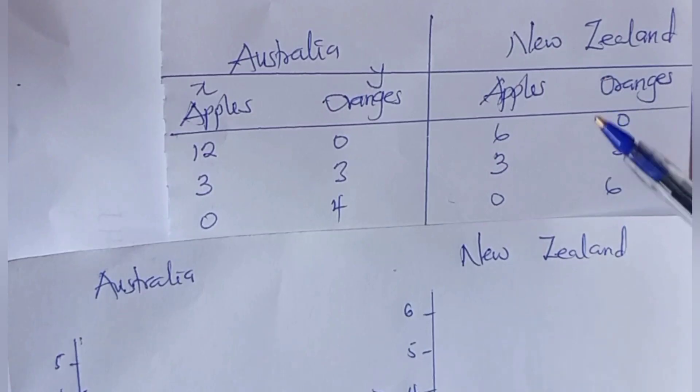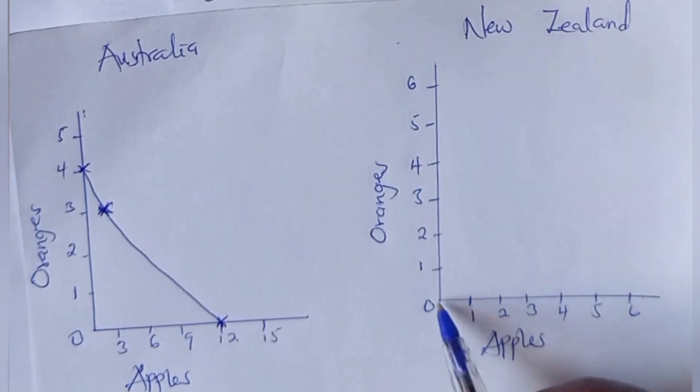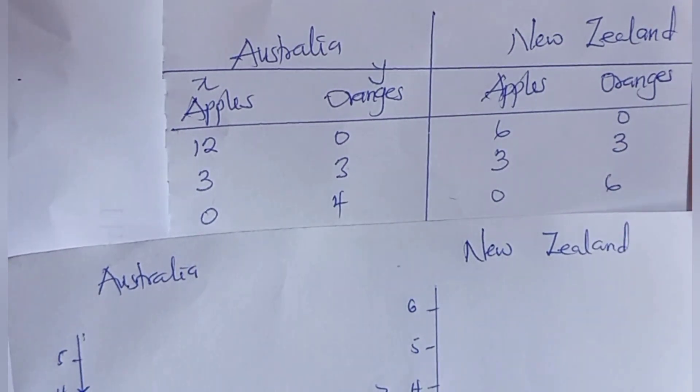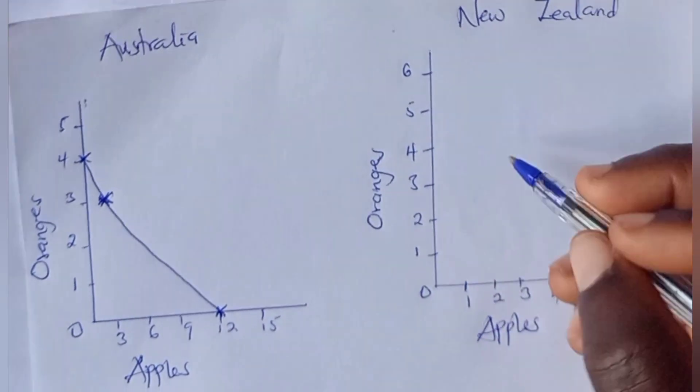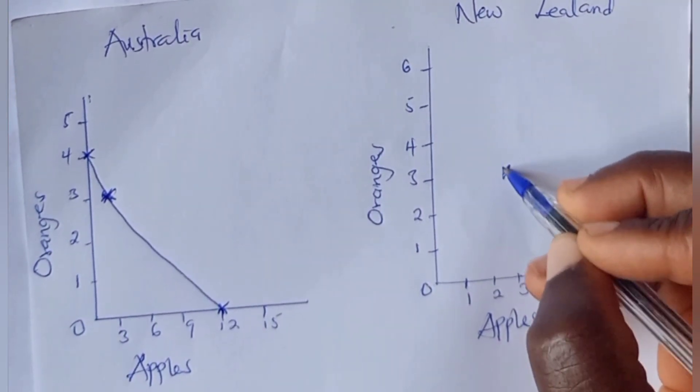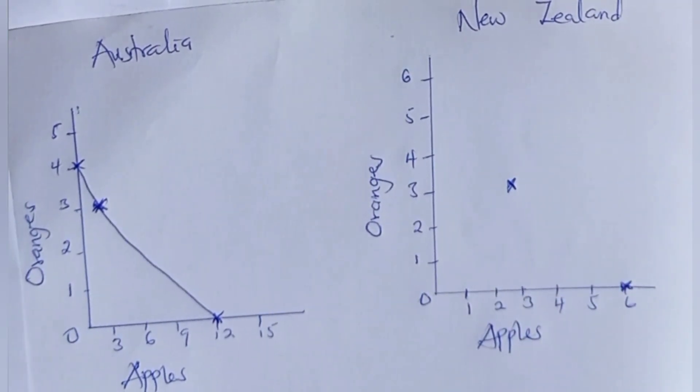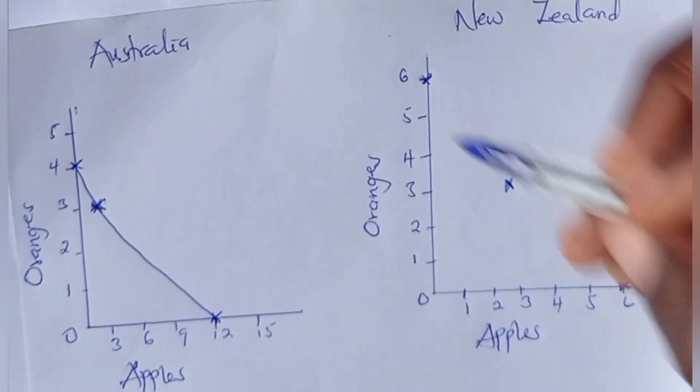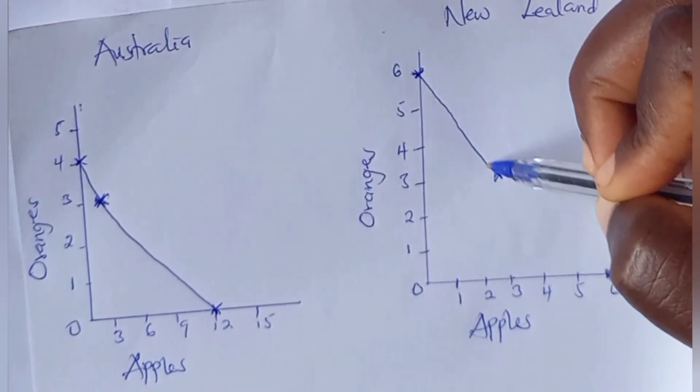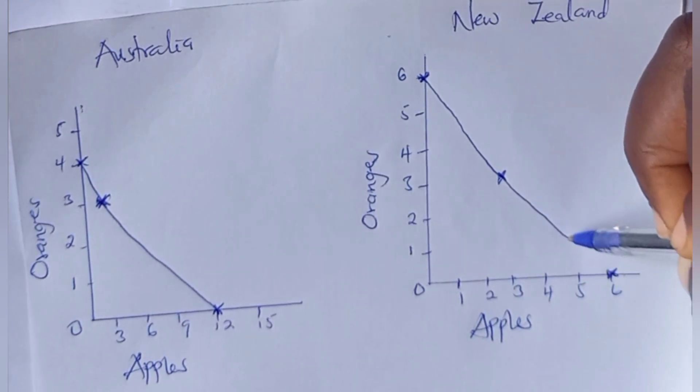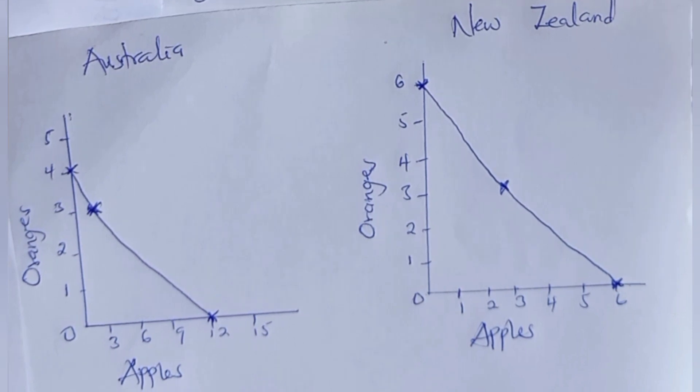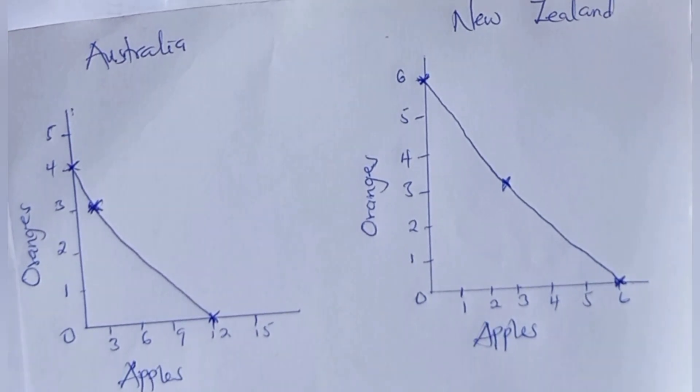You can use either your hand or your ruler. This is not drawn to scale. Now we come to New Zealand. New Zealand produces 6 apples and zero oranges - 6 apples, zero oranges, so a plot should be here. And then 3 apples, 3 oranges. Remember this is not drawn to scale. Zero apples, 6 oranges - also here. Then you try and plot it. It's best you do it with your hand or some also consider doing it with a ruler to get it, but I consider doing it with my hand because of the nature of the PPF which is always curving out.